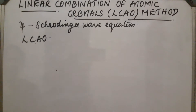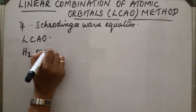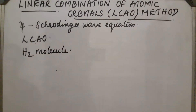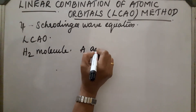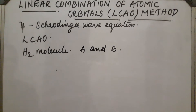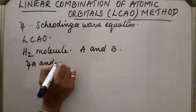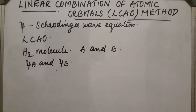This LCAO method can be applied to molecules. Let us take hydrogen molecule H2 as an example. Hydrogen molecule contains two atoms; let A and B be the two atoms. Their atomic orbitals are represented by ψA and ψB, the wave functions of the two atoms. In the ground state, each hydrogen atom contains one electron in the 1s orbital.